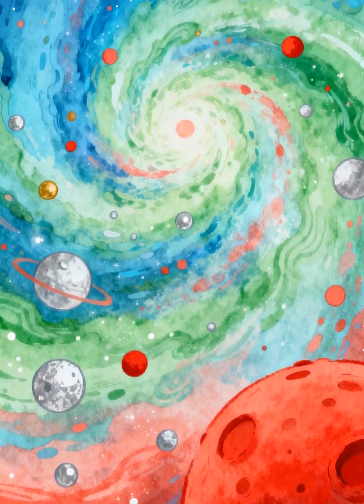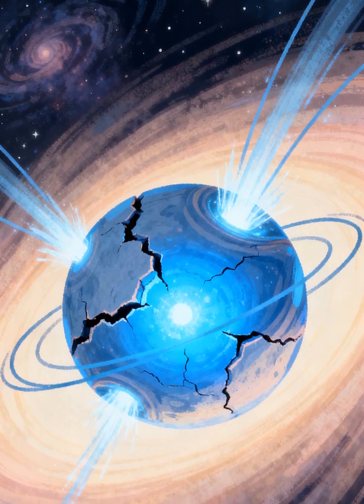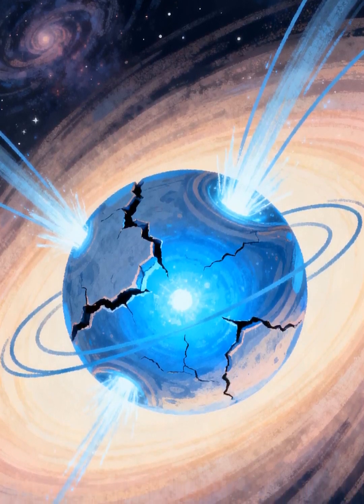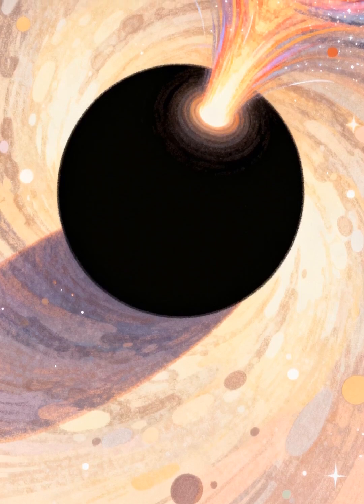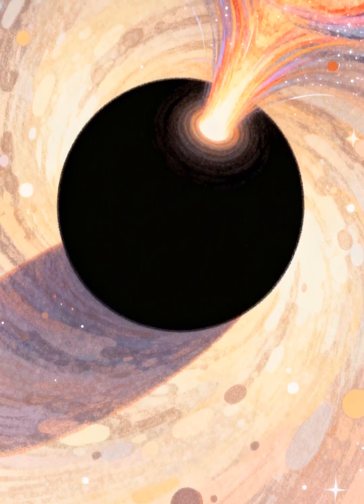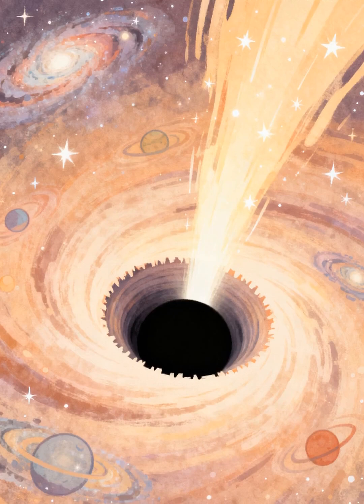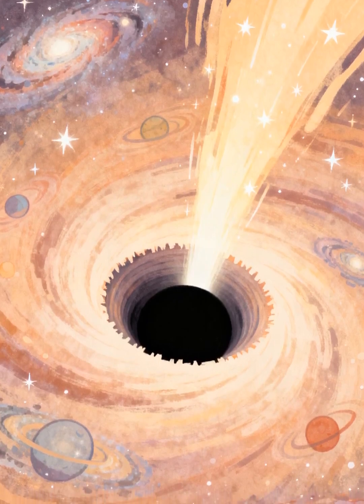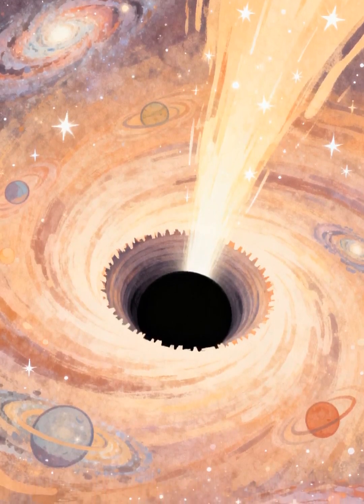The core may become a neutron star, an incredibly dense object. Or, if the star is massive enough, it may form a black hole. A black hole's gravity is so strong that nothing, not even light, can escape.